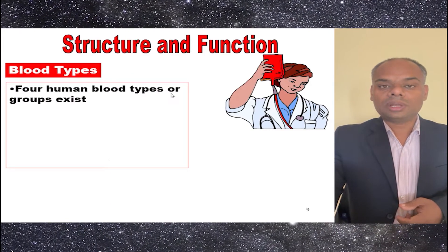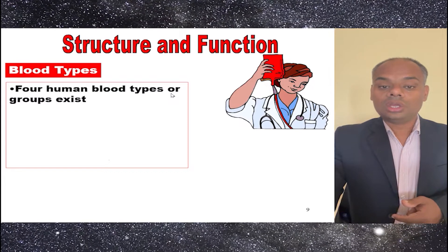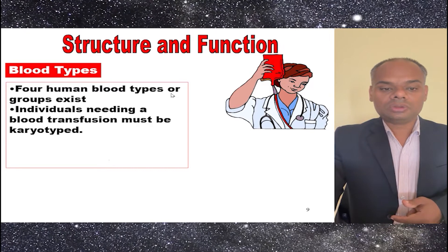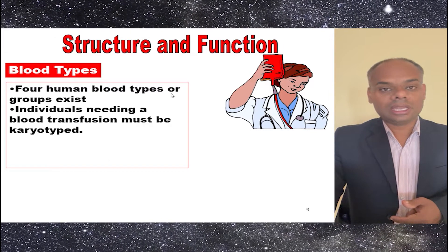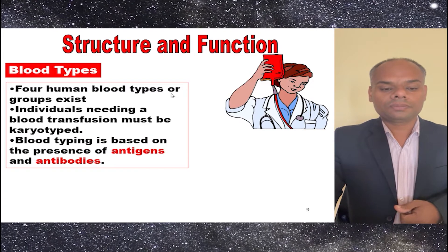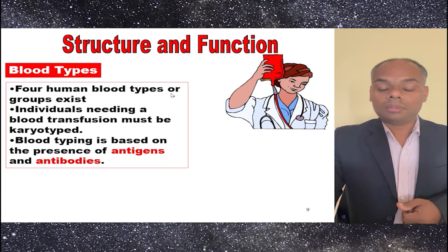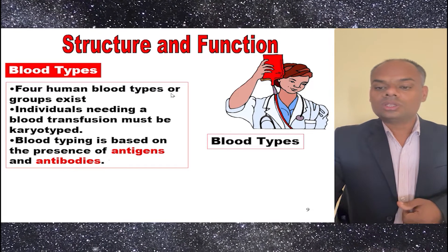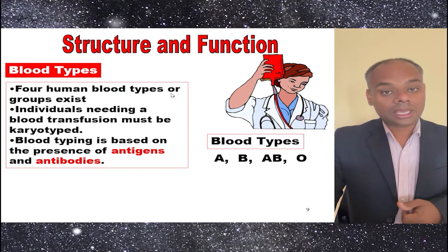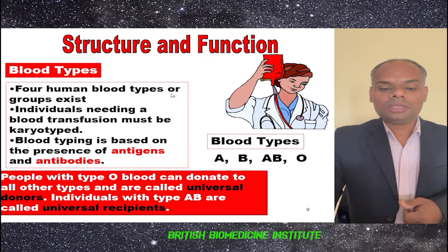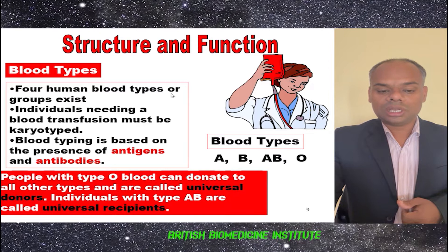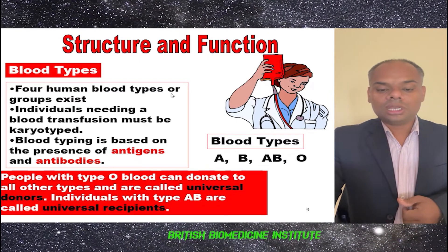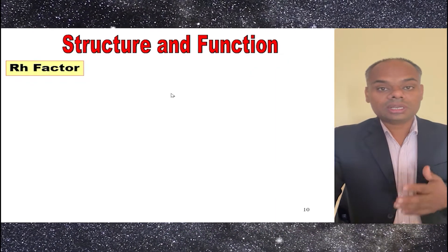Next comes blood types. There are four main human blood types. If an individual requires a blood transfusion, blood typing is very important. Blood type is based on the presence of antigens and antibodies. The blood types are A, B, AB, and O. People with type O blood can donate to all other types and are called universal donors. Individuals with type AB are called universal recipients.